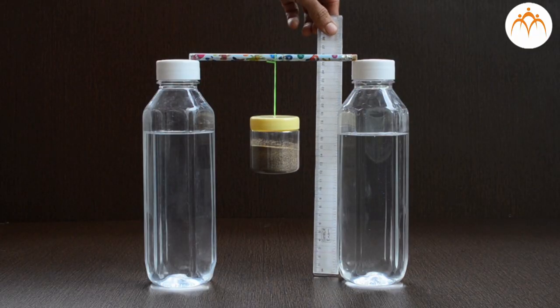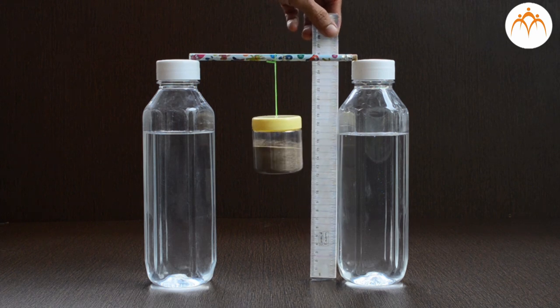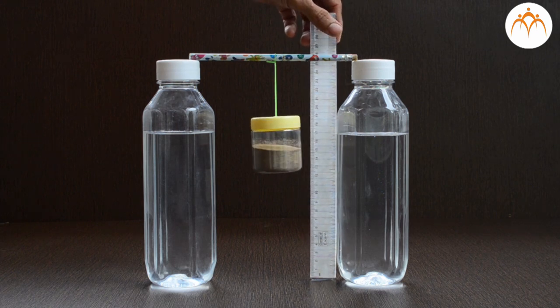Ruler helps to find out the length of stretched rubber band. What will happen if I hang it by itself? Rubber band is stretched as weight of the container is pulling it down.